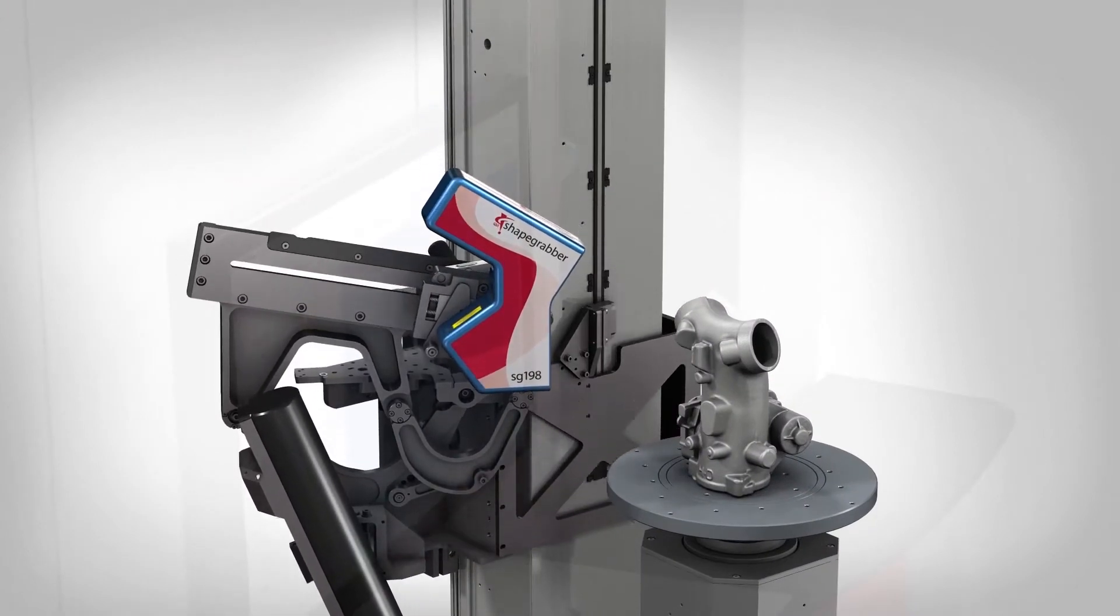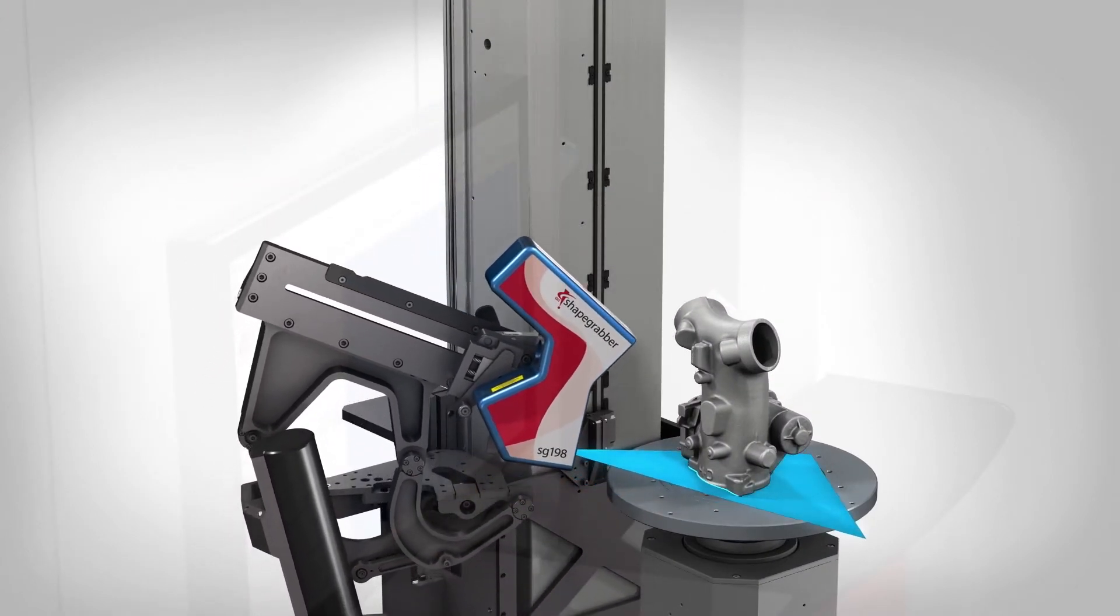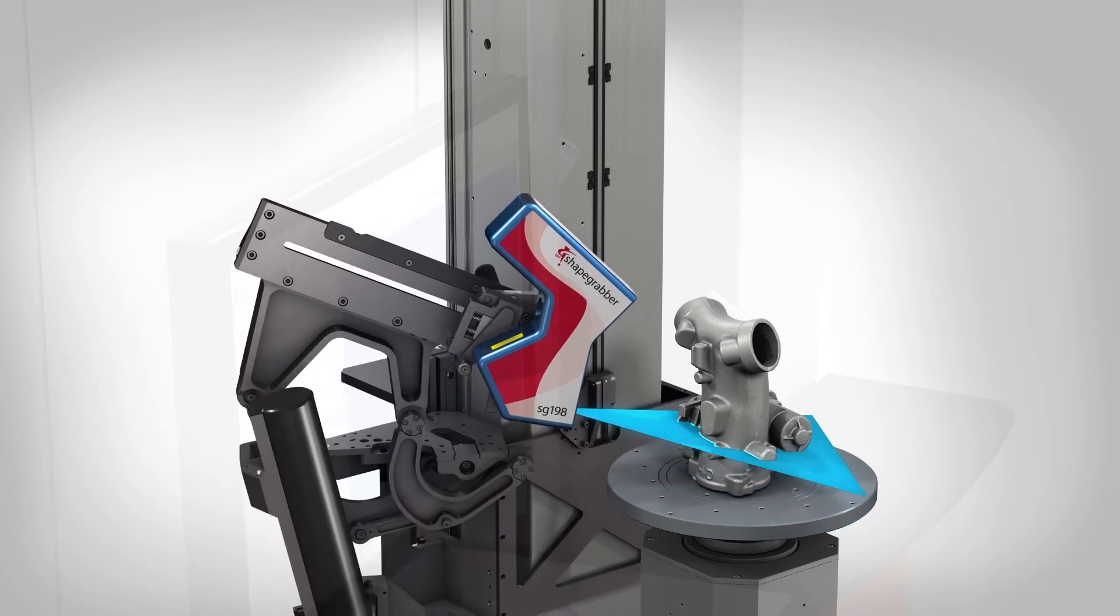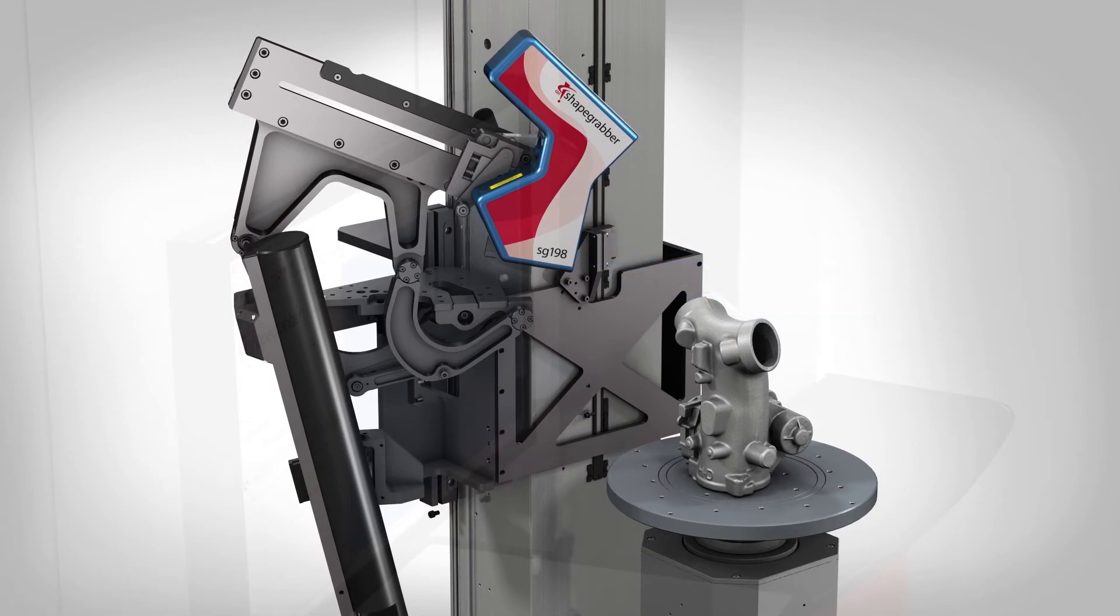The optional 25-degree tilt mechanism provides an additional look angle by automatically rotating the scan head resulting in faster, more complete part coverage without manually reorienting the part.